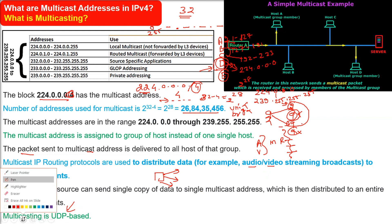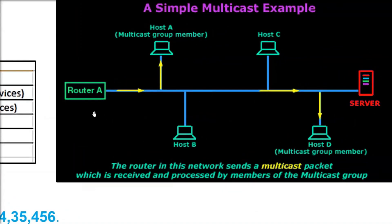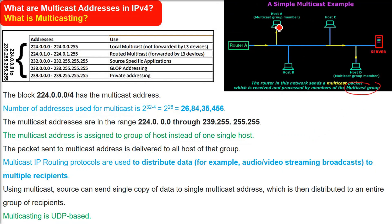Let me show you diagrammatically what is happening. In this simple multicast example, Router A sends a multicast packet which is received and processed by members of the multicast group. The packet — shown in yellow — goes only to Host A and Host D, which are the multicast group members. It does not go to Host B or Host C. This is multicast addressing, and it must start from 224.